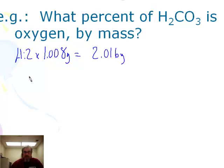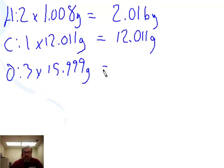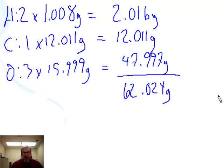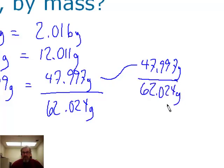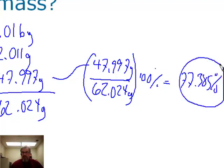For carbon, 1 times 12.011 grams, the molar mass of carbon, is 12.011 grams. For oxygen, 3 times 15.999 grams comes out to 47.997 grams. Summing everything gives a total of 62.024 grams. The percent oxygen by mass is 47.997 grams divided by 62.024 grams, and we find that it's 77.385% to five significant figures.